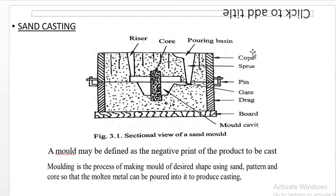The first technique is sand casting. The first part is to drag the sand casting. The main technique is to make a mold cavity, and then we will put the molten metal into the mold. It will solidify in the shape of the mold — this is sand casting.